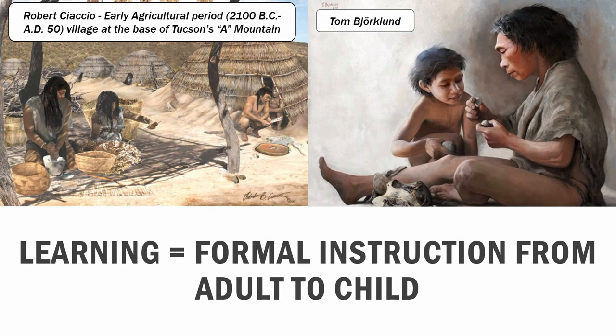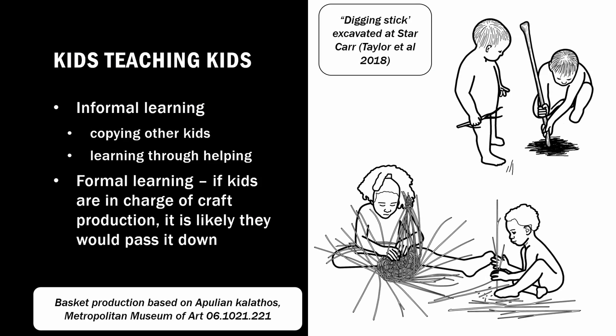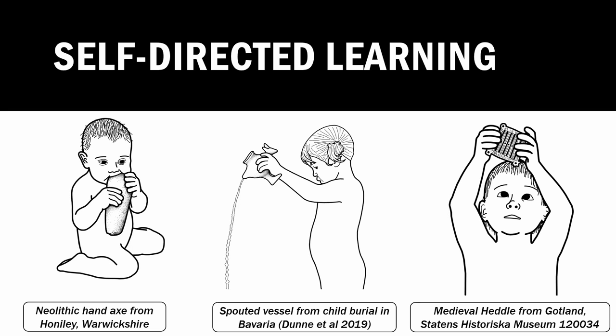One particular context in which adults are always present is that of learning. In these reconstructions, learning is always presented as formal instruction from adult to child. But actually, an adult is not a prerequisite for learning — children have the capacity to teach each other, whether informally as children copy other children or learn through helping, or more formally as kids pass down craft production learned from an adult. Much of childhood learning and development is done through self-directed learning, as kids explore the world, material properties, and objects — but this is something we never see in archaeological reconstruction.